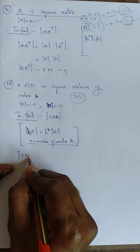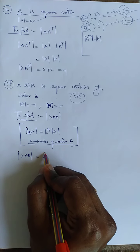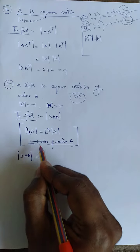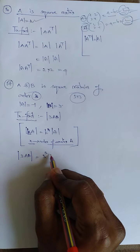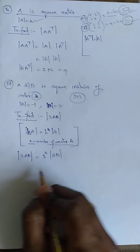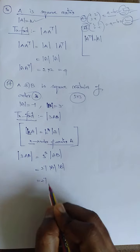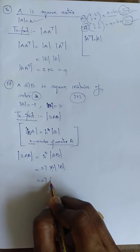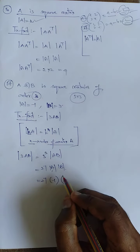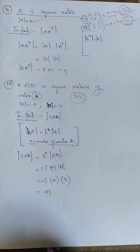Determinant of 3AB = 3^N × det(AB) = 3³ × det(A) × det(B). 3³ is 27. Determinant of A is minus 1, determinant of B is 3. So 27 × (minus 1) × 3 = 27 × 3 with a minus sign = minus 81. Therefore, the answer for this sum is minus 81.